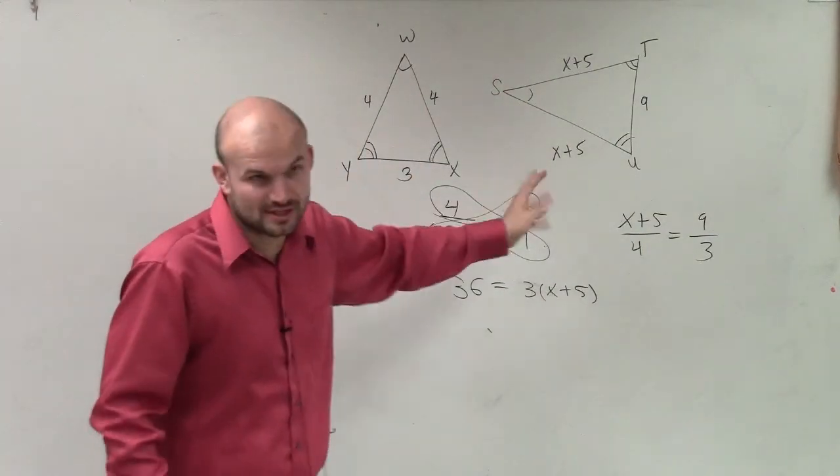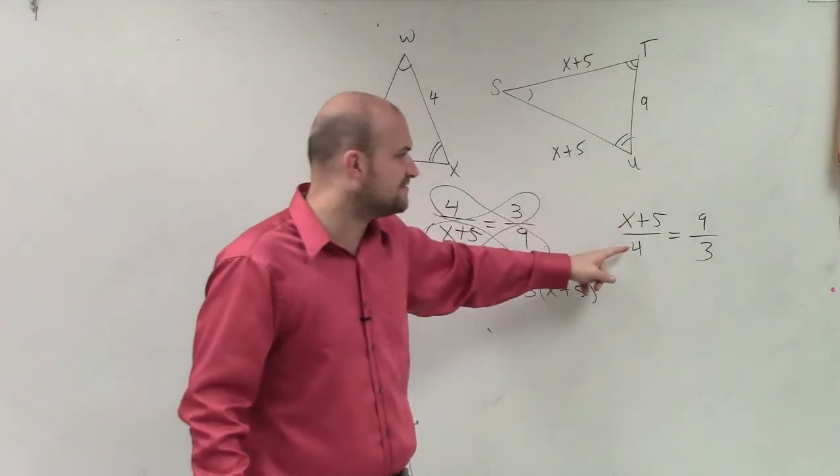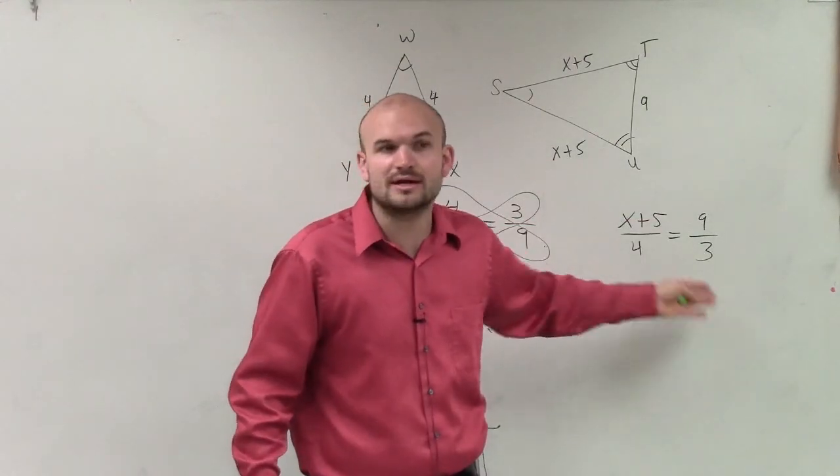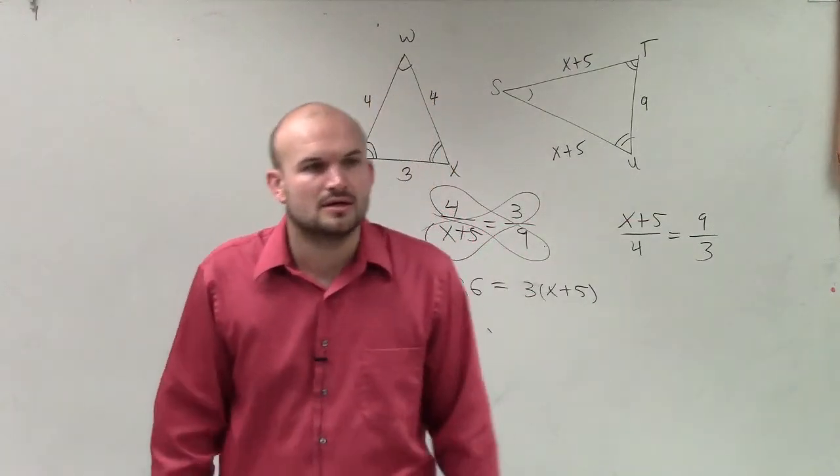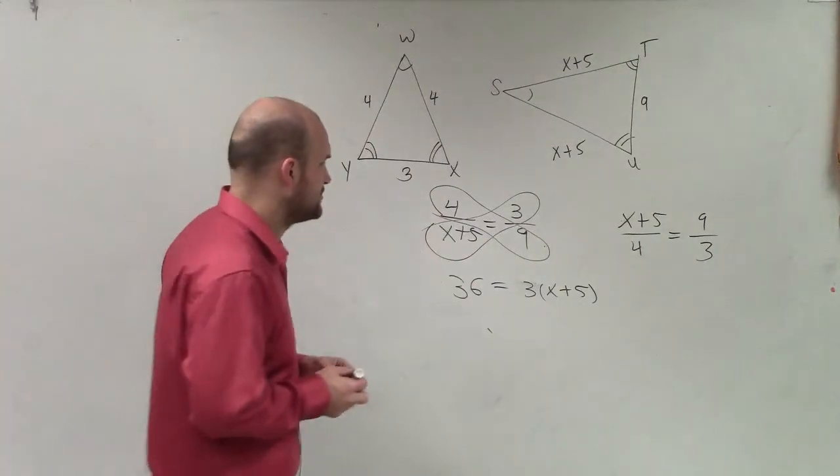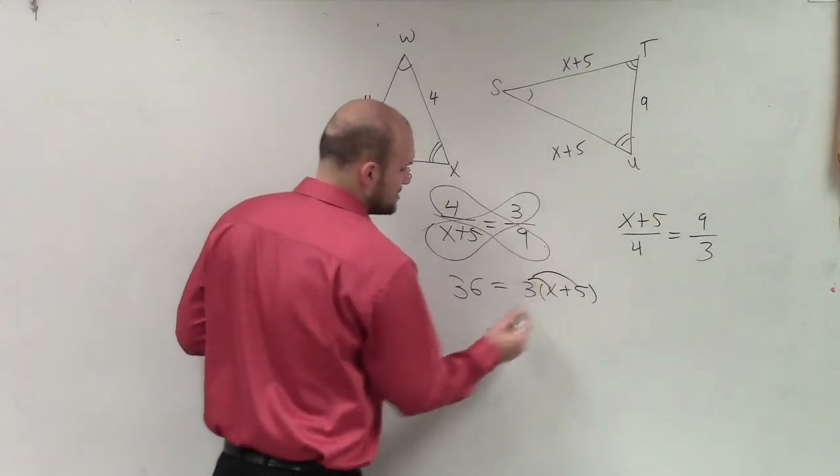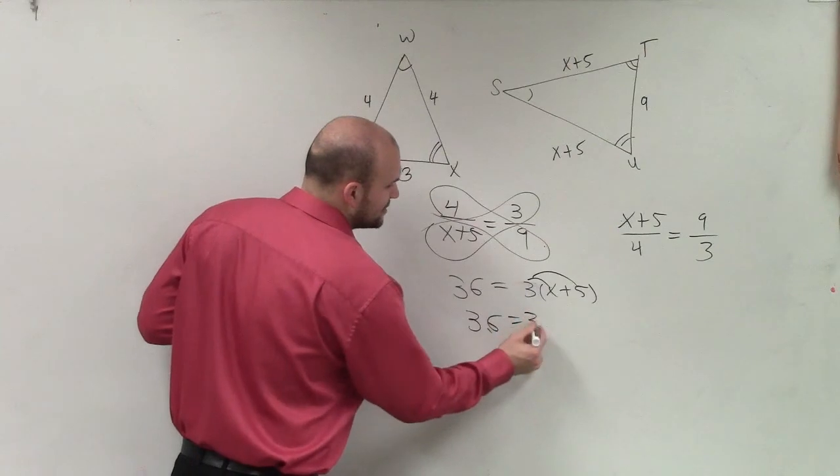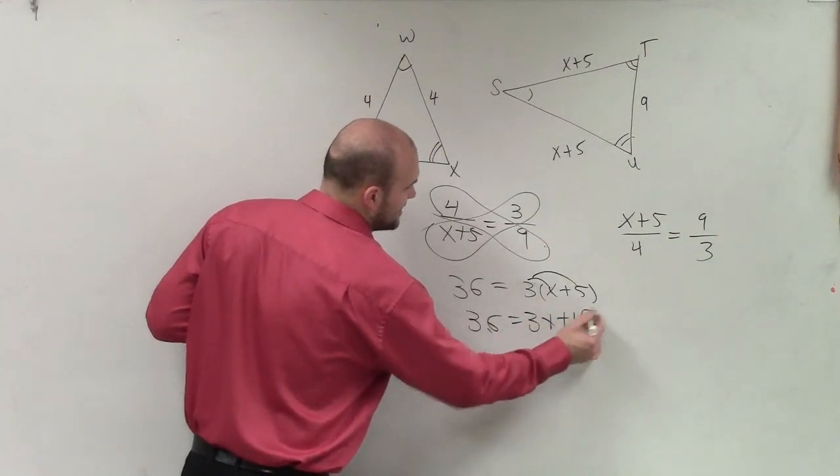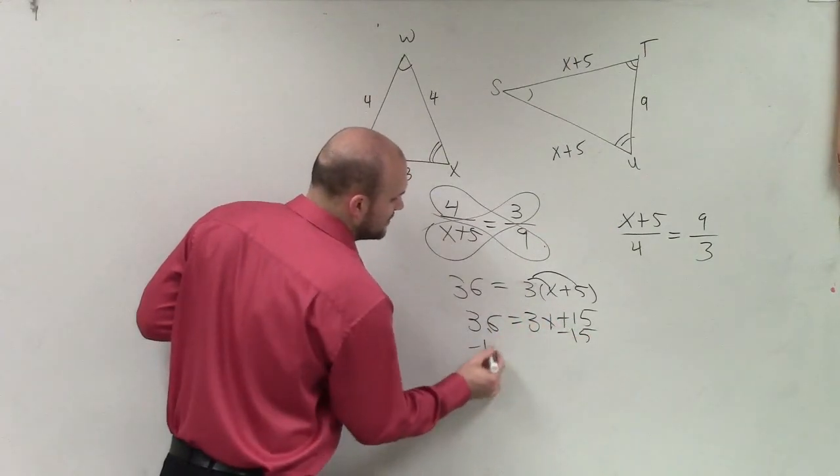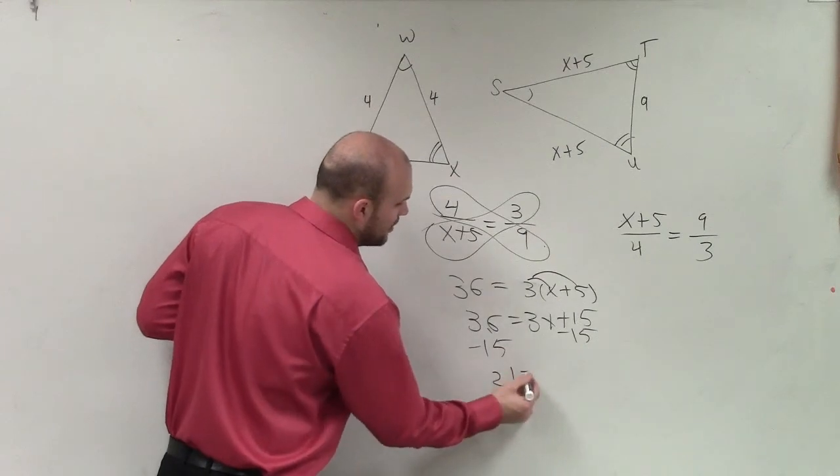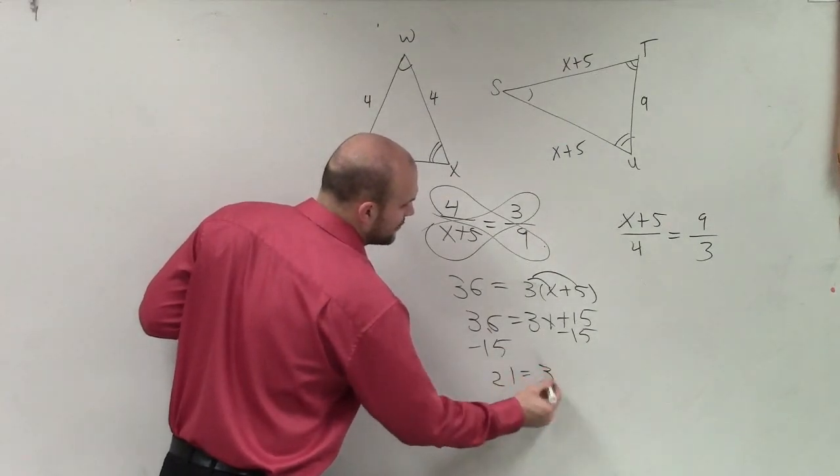You couldn't swap those the other way and say x plus 5 is to 4 as 3 is to 9. You've got to go from one triangle to the next. So when you multiply across, I have 36 equals 3x plus 15. Subtract 15 from both sides: 21 equals 3x.